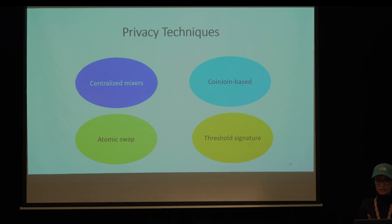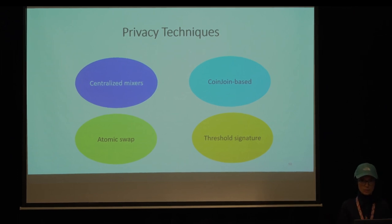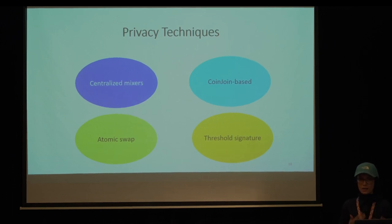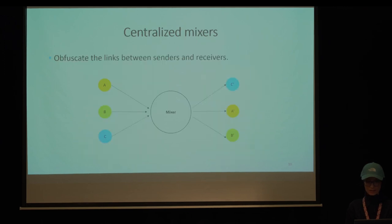We categorized these privacy techniques into four groups: centralized mixers, CoinJoin-based transactions, atomic swap transactions, and threshold signatures. I'm going to explain the basic ideas of these categories in the next slides.